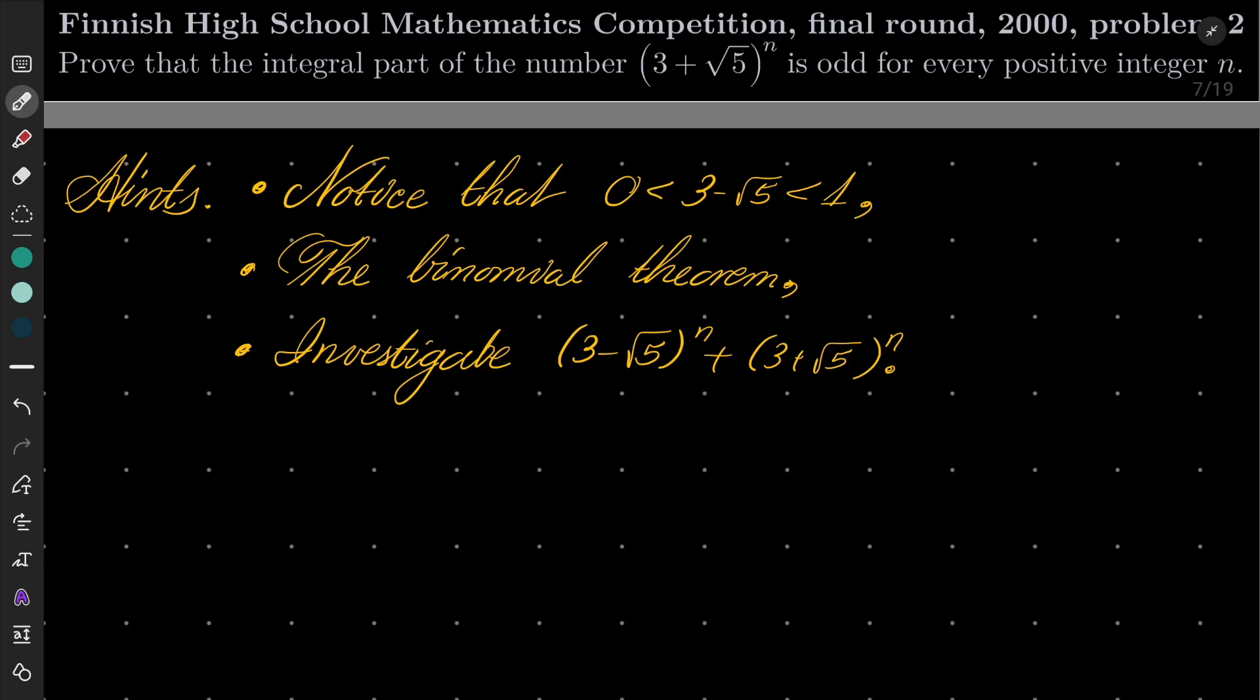My hints for this problem: First of all, notice that (3 - √5) is strictly between 0 and 1.